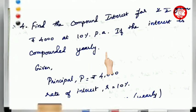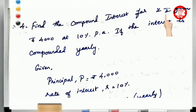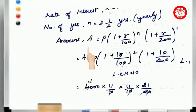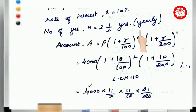This is our compound interest case where the number of years is a fraction. How do we calculate compound interest compounded yearly when the number of years is a fraction? We are given the principal, rate of interest, and number of years — two and a half years.